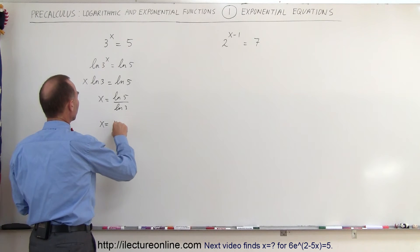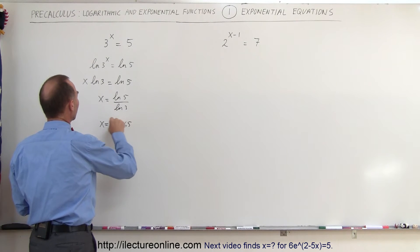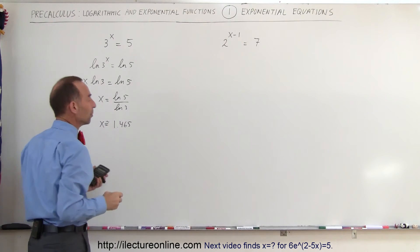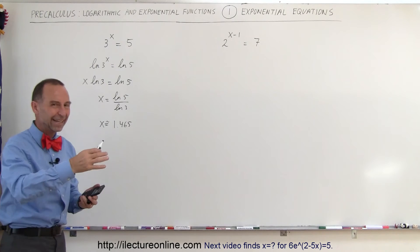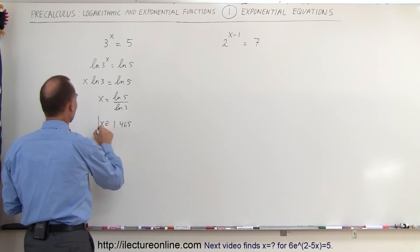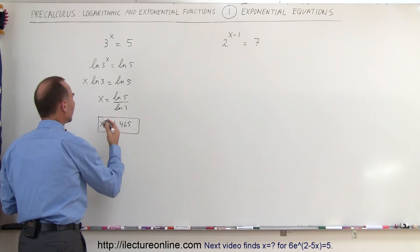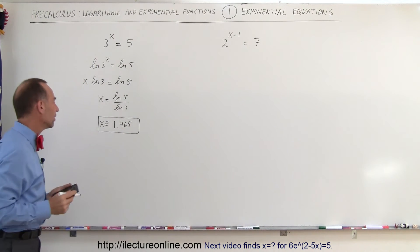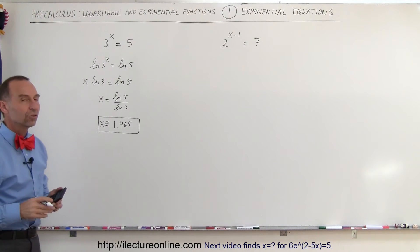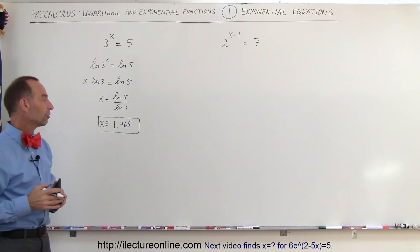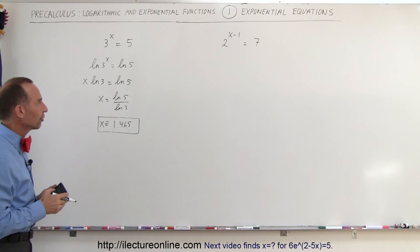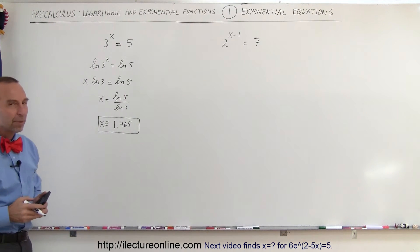So x is approximately 1.465. Of course that's approximate because the decimal goes on forever, but that's good enough to three decimal places.